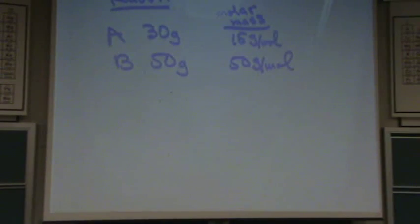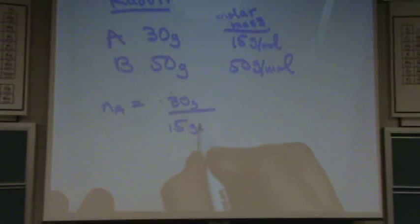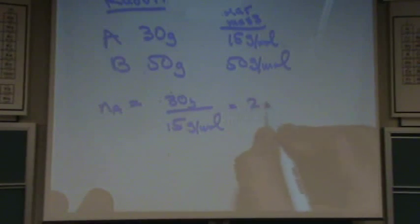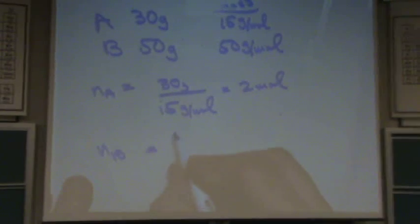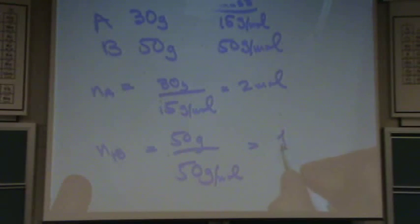So when you're doing this kind of Raoult's problem, you always want to go to moles. So moles of A would be 30 grams divided by 15 grams per mole. This would be 2 moles. And the moles of B would be 50 grams divided by 50 grams per mole, and that would be 1 mole.